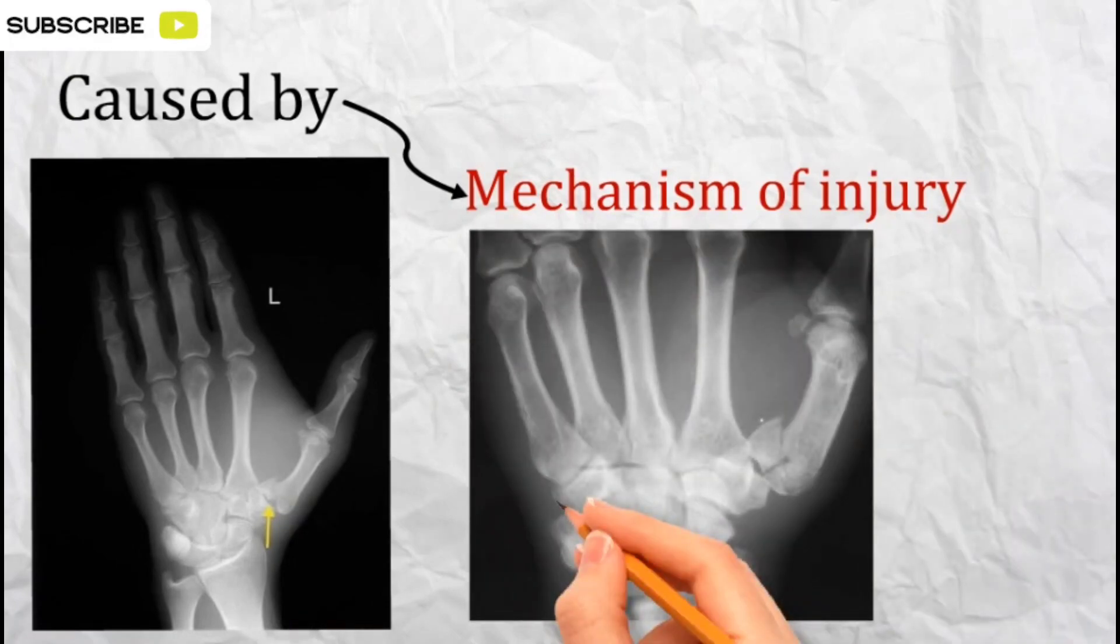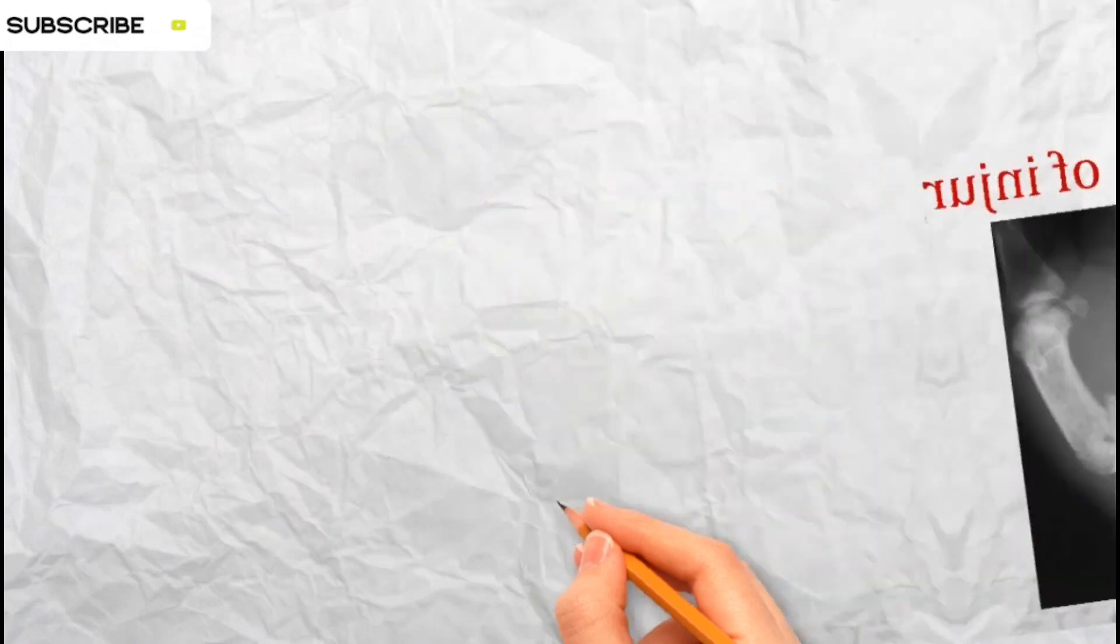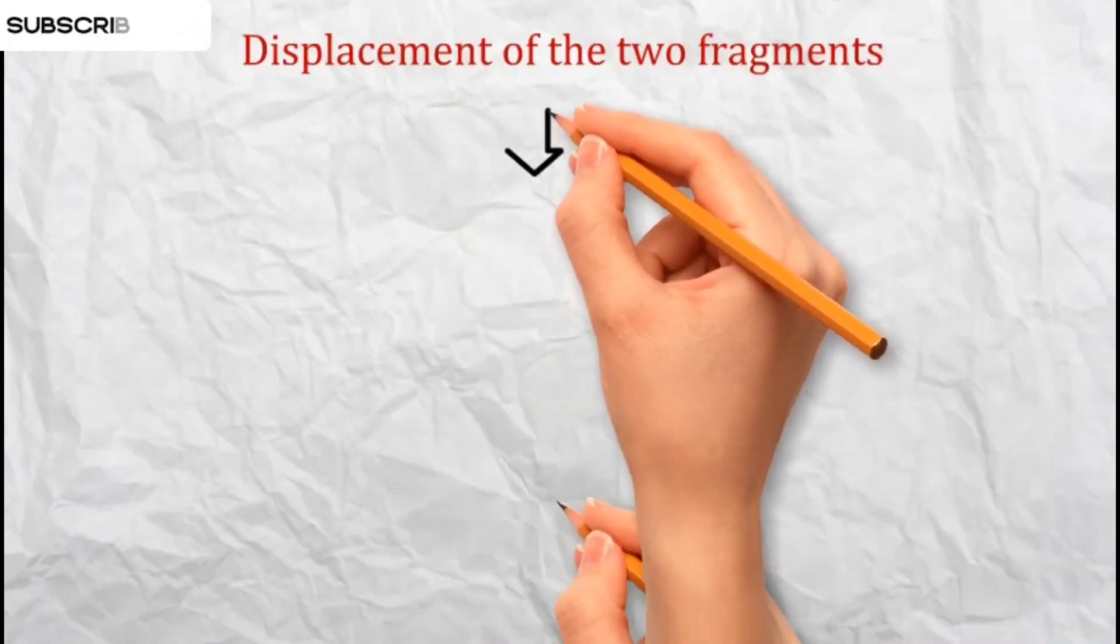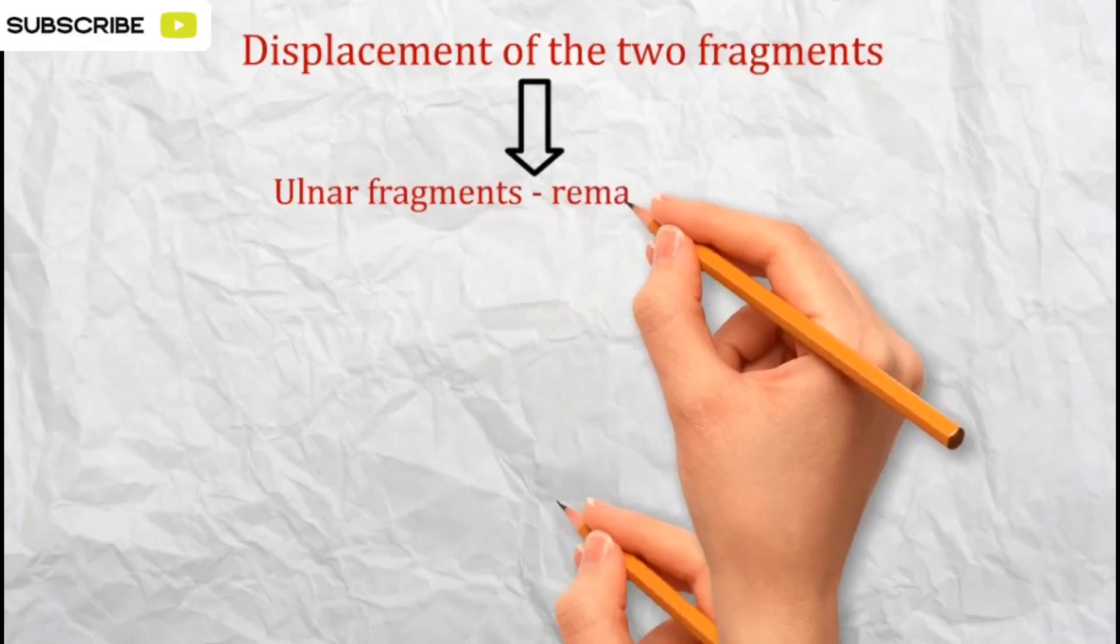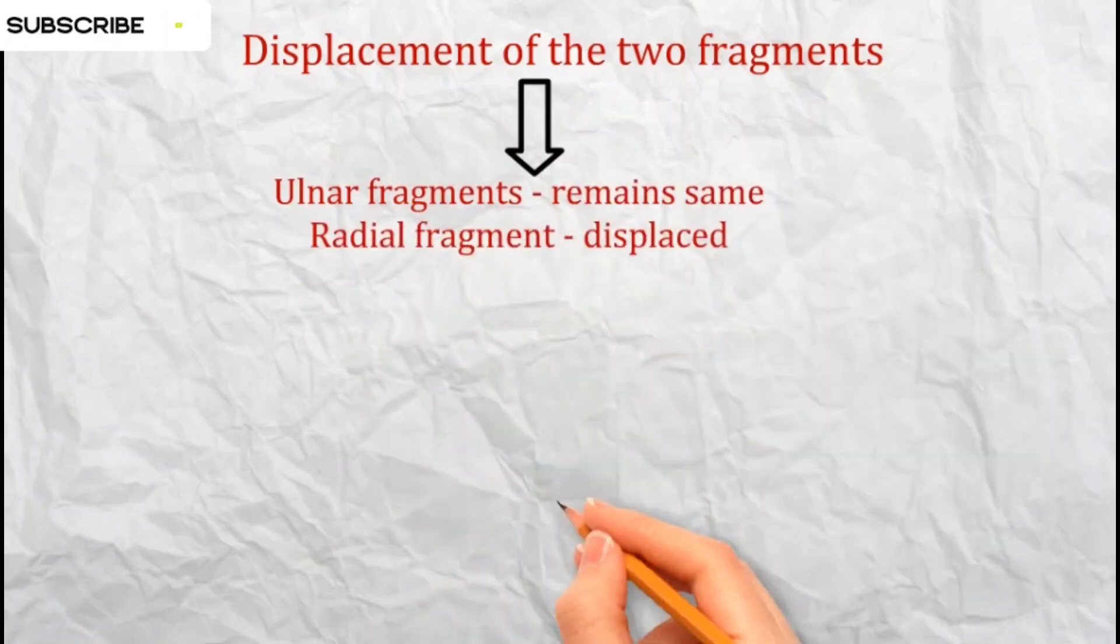This fracture can be further understood by looking at the displacement of the two fragments. The ulnar fragment typically remains in place, while the radial fragment is displaced.